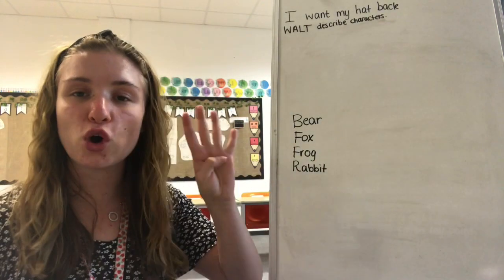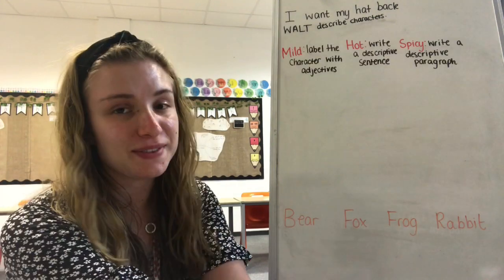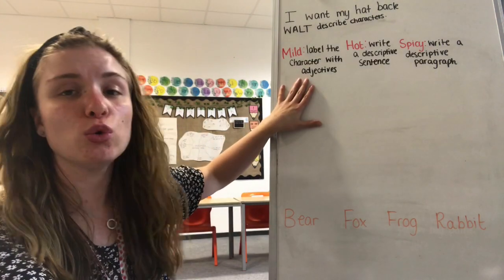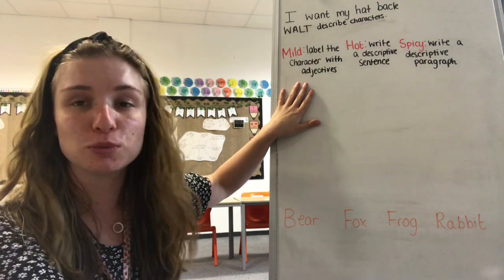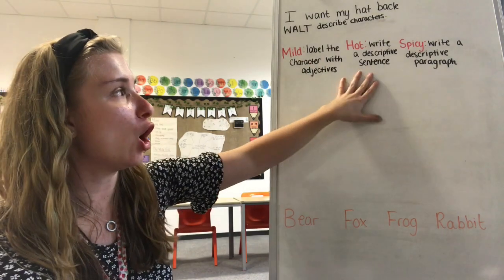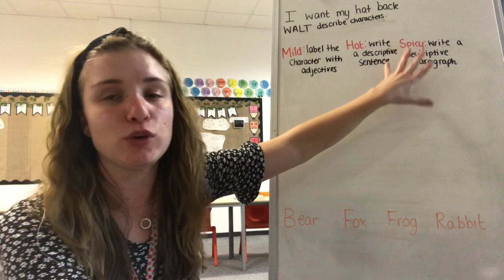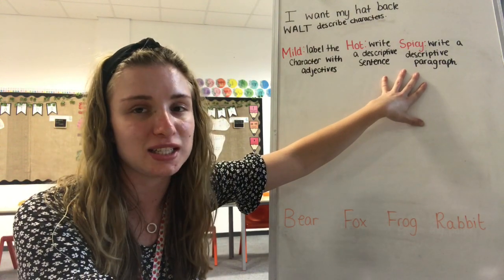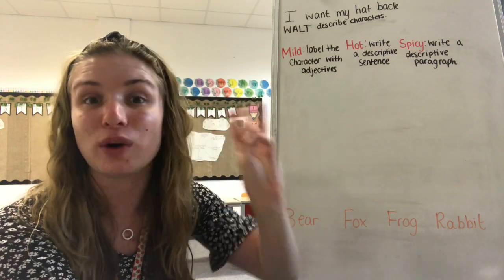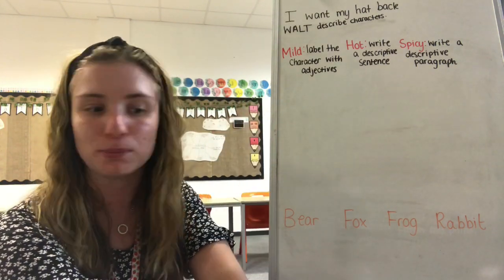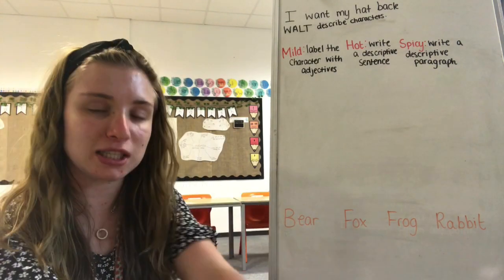So these are our four characters that we are going to be looking at today. Today's activity is a bit like Monday's one. We are all going to do the mild, where we are going to label the character that we choose with some adjectives that describe them. Our hot is we are going to write a descriptive sentence. And if you want to do spicy, you're going to turn that descriptive sentence into a descriptive paragraph with at least three sentences. But first of all, we are going to pick which animal we would like to describe.